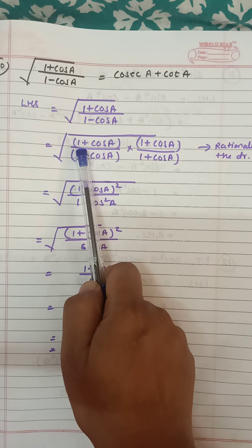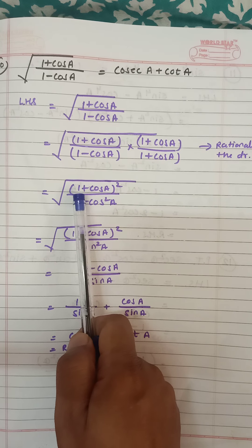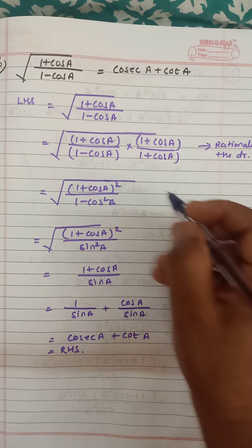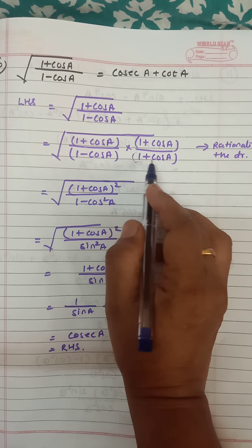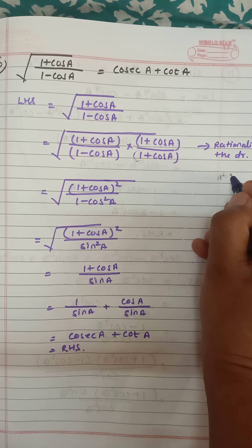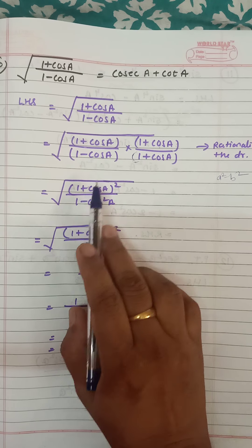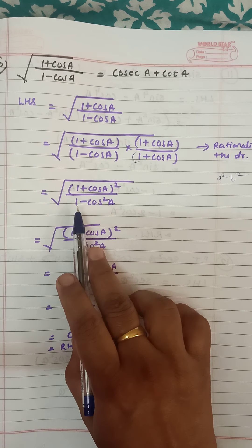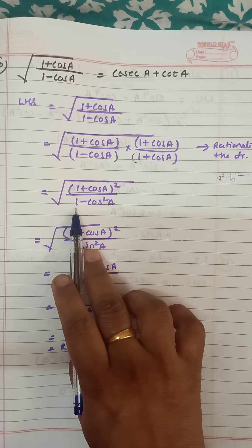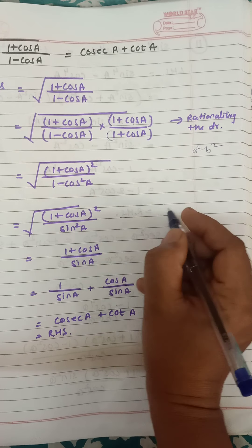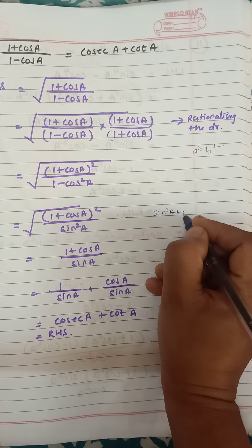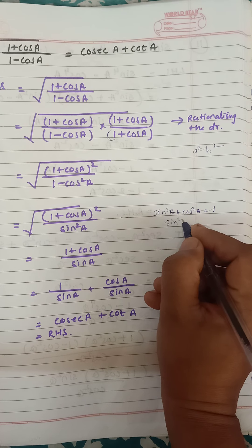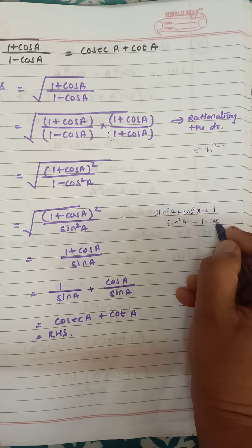In the numerator, (1 plus cos a)(1 plus cos a) becomes (1 plus cos a) whole squared. In the denominator, we use the formula (a plus b)(a minus b) = a² minus b², giving 1 squared minus cos²a, which is 1 minus cos²a. We apply the identity sin²a plus cos²a = 1, so sin²a = 1 minus cos²a.